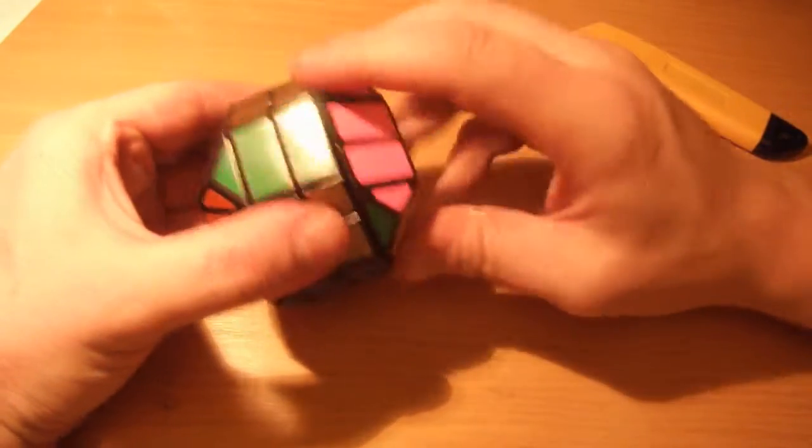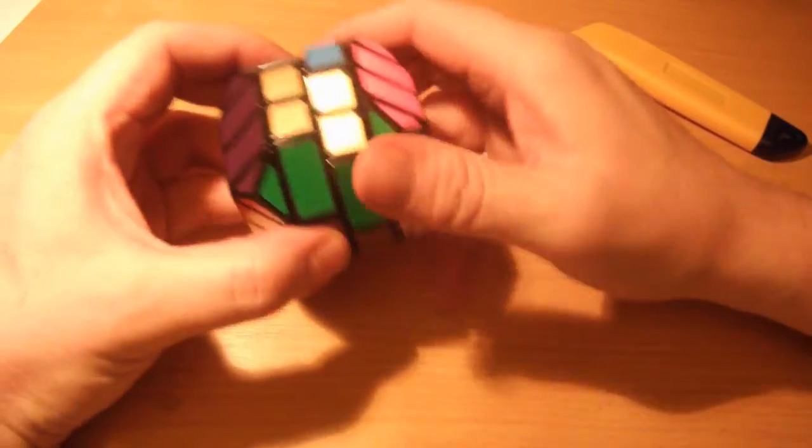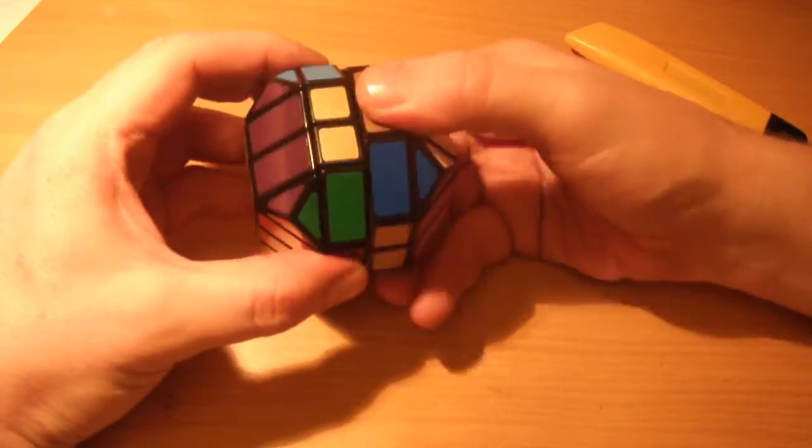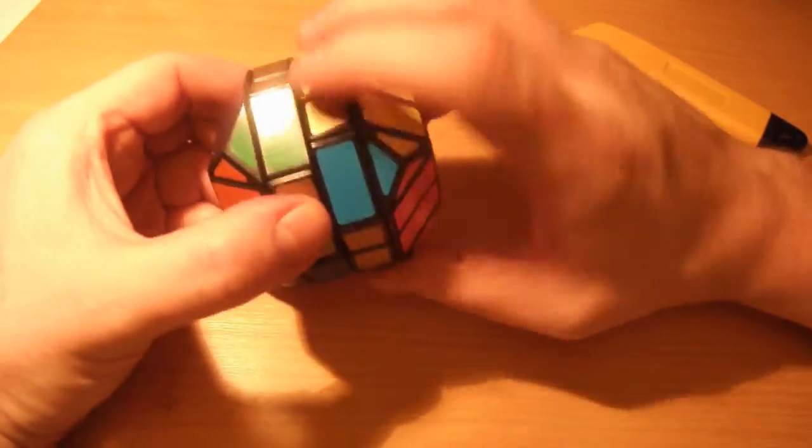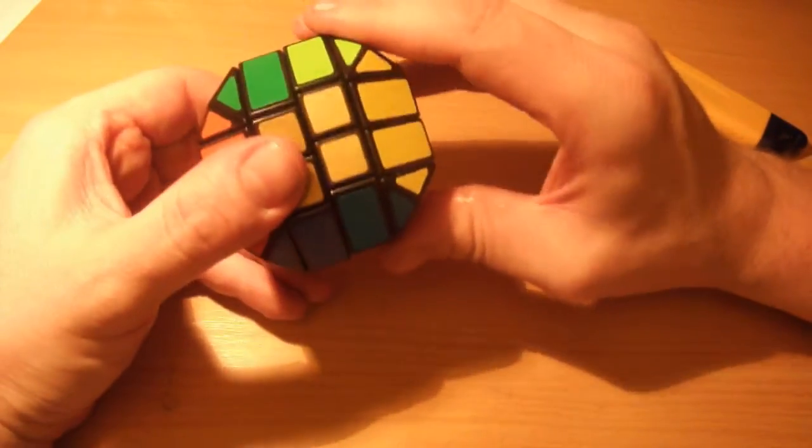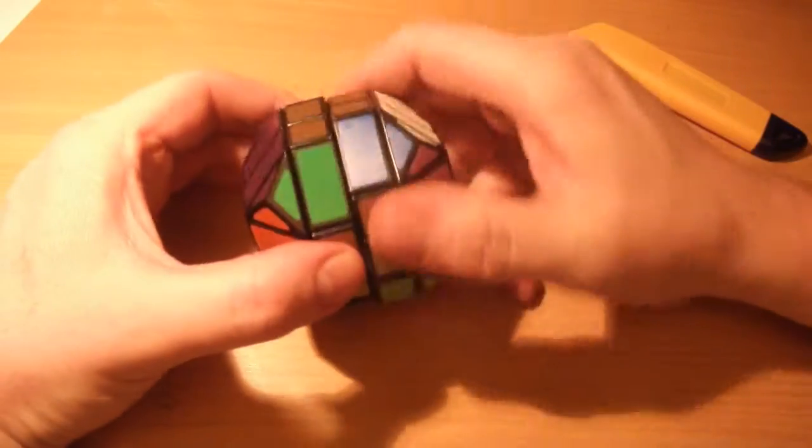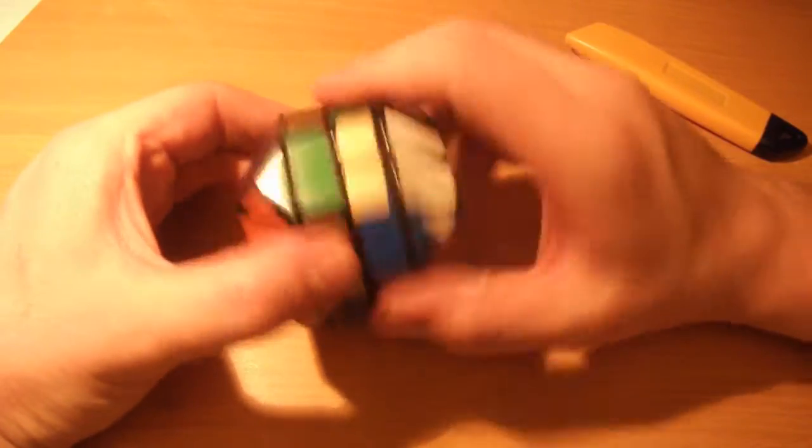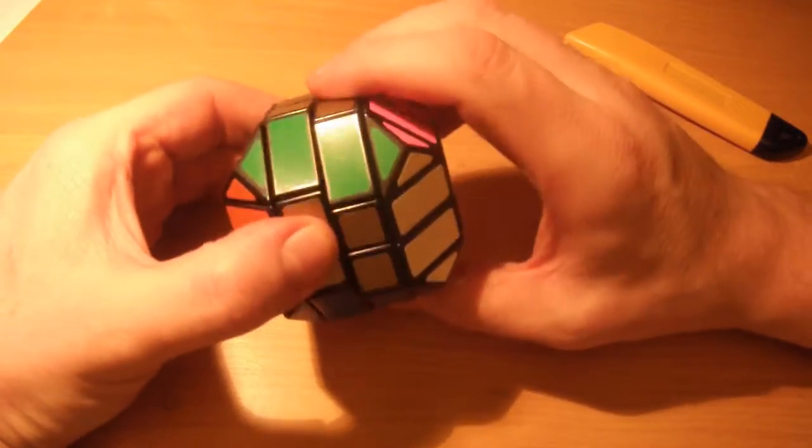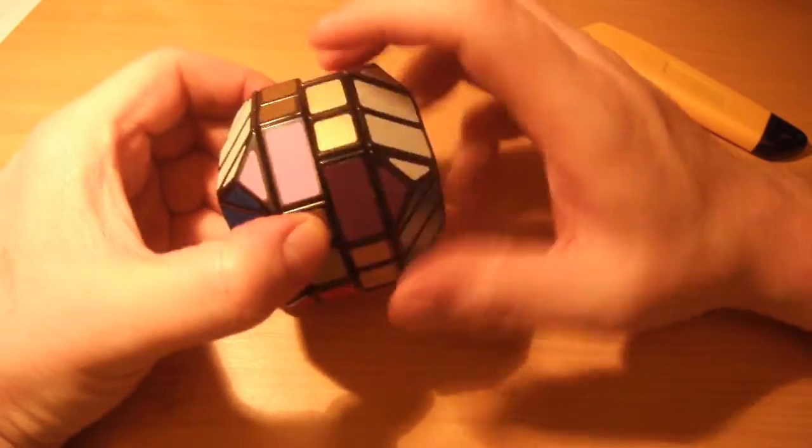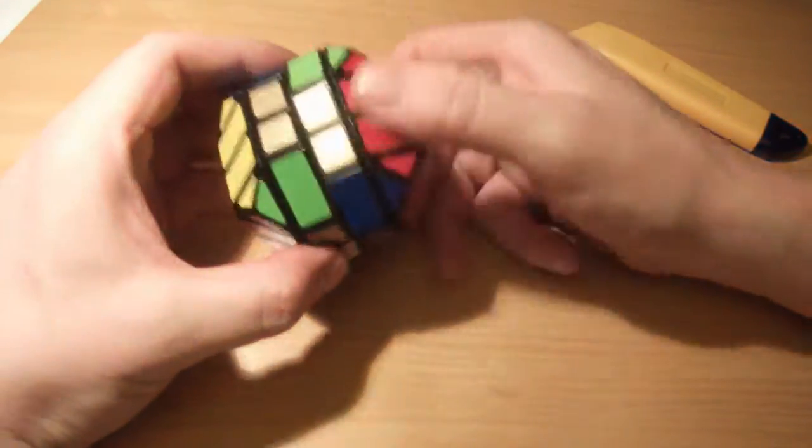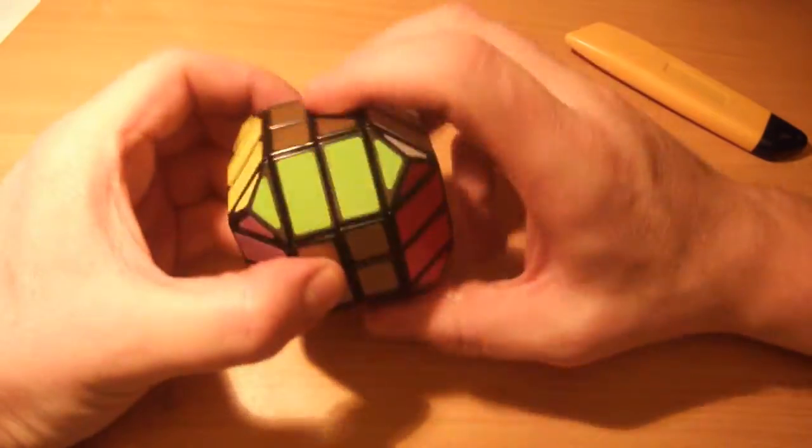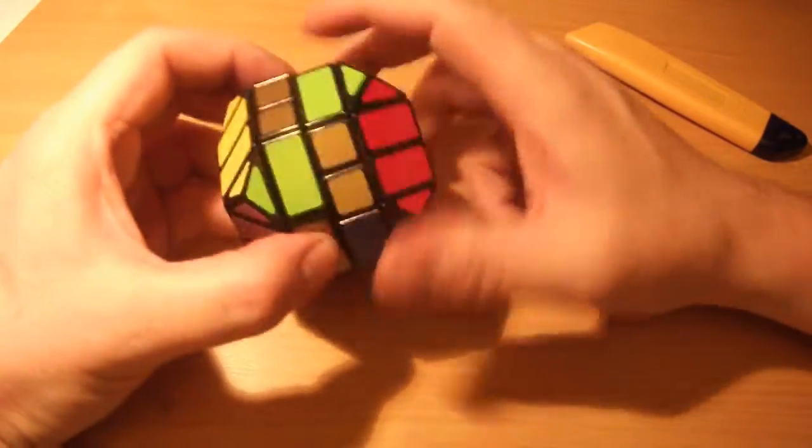The center layers turn absolutely great straight off, whereas this one there is definitely something catching. I can feel there's some flashing or something inside, you can probably hear the different sound of that one turning. But yeah, now they turn absolutely fine, I've got no problem with that puzzle whatsoever.